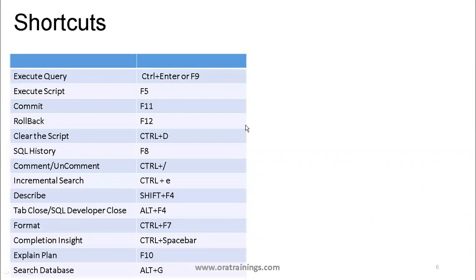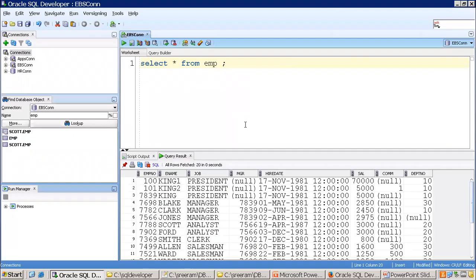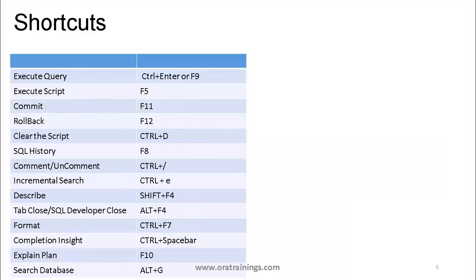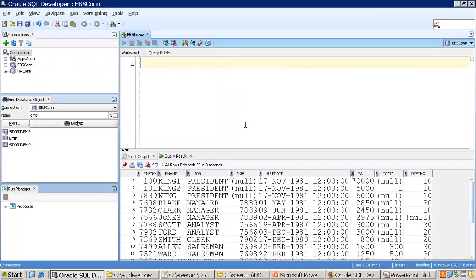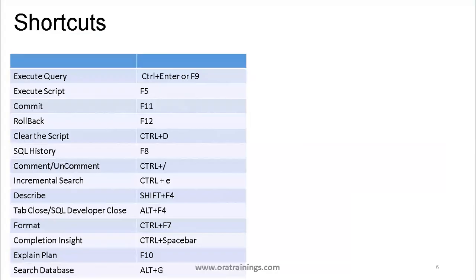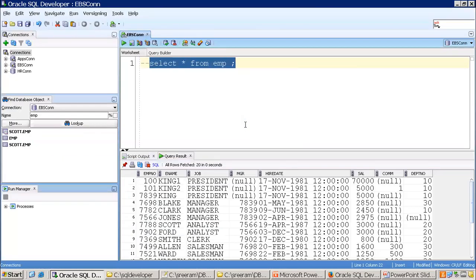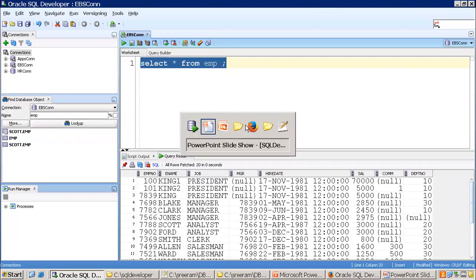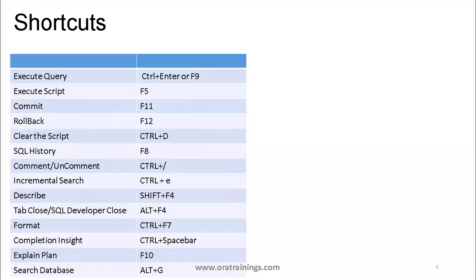F5 is for script output. For DML operations, F11 is for commit and F12 is for rollback. If you want to clear the script, press Ctrl+D. Ctrl+Z gives you the previous state. Ctrl+/ is for toggling comments — pressing it once comments the line, pressing it again uncomments it. This works for single-line comments.